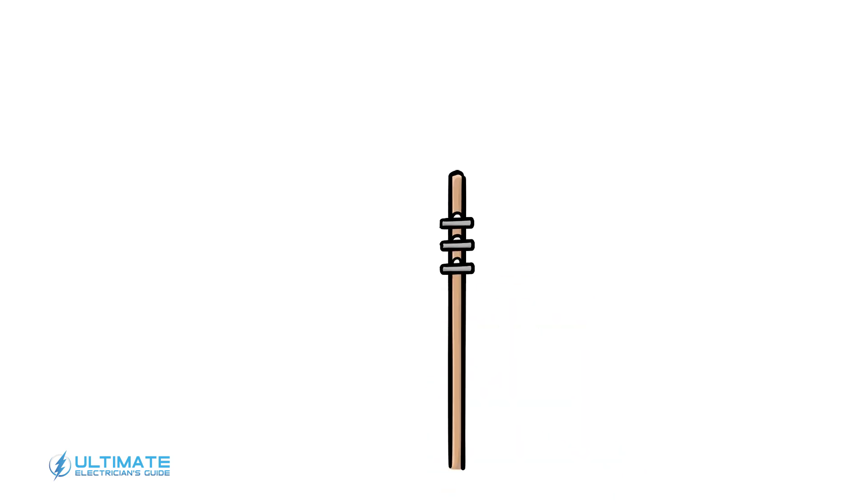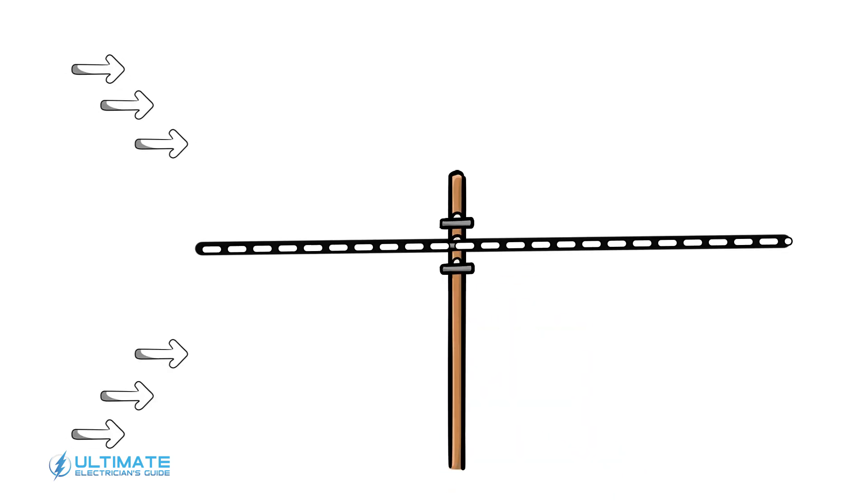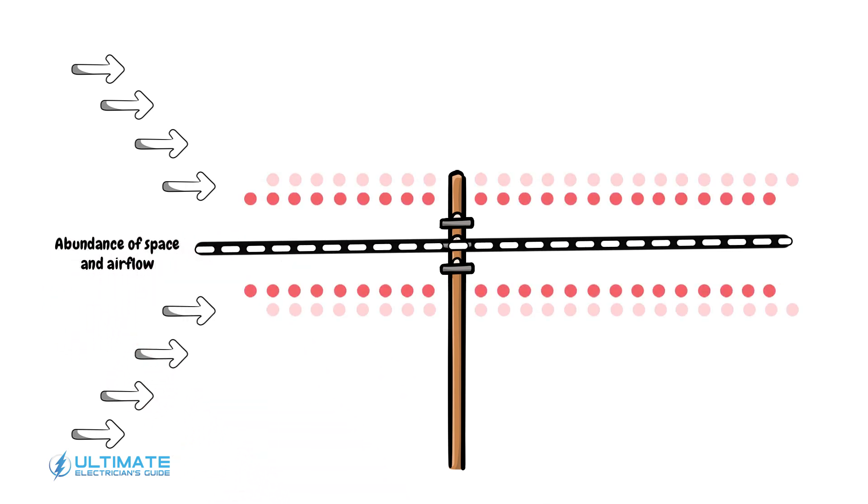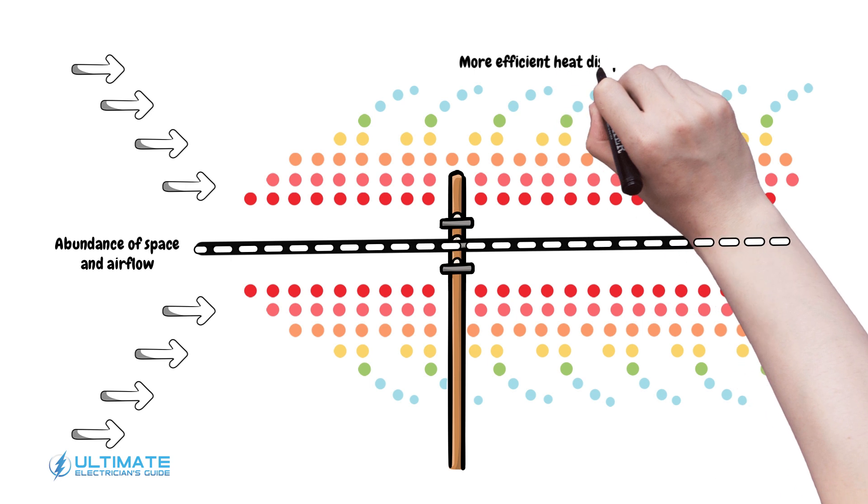Picture a conductor out in the open, in free air. Without any neighboring conductors, it enjoys an abundance of space and airflow, allowing it to dissipate the heat it generates more efficiently.